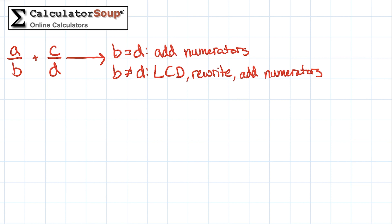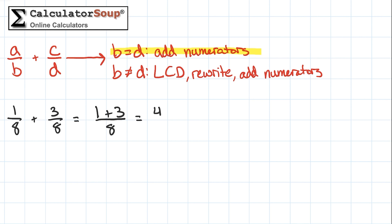Let's look at the first scenario where the denominators are already equal. For our first example, let's add the fractions 1/8 plus 3/8. To add these fractions, add the top numbers together and put the result over the common denominator. 1 plus 3 is 4, and that goes over 8, so our result is 4 eighths.